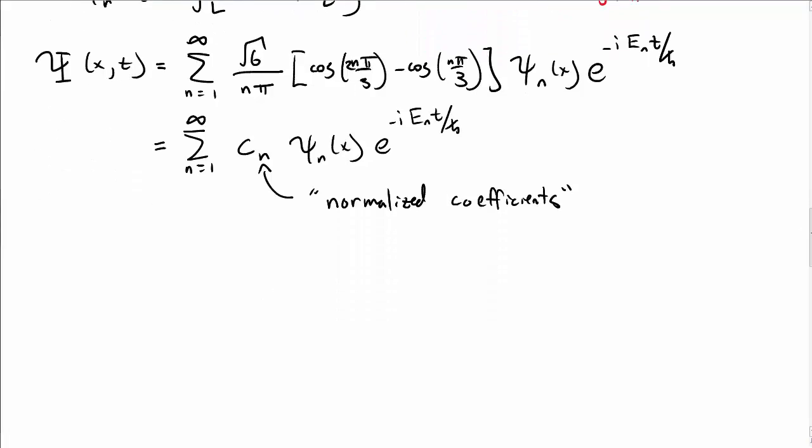And that's important because then the c sub ns are the normalized coefficients of our wave functions. It turns out that this is a very useful way of rewriting a wave function by writing it as normalized coefficients times solutions to the time independent Schrodinger's equation.